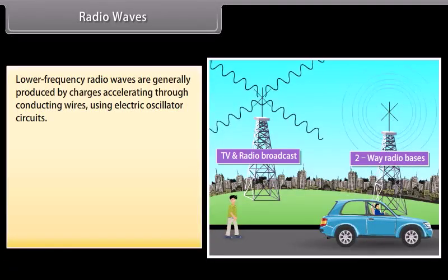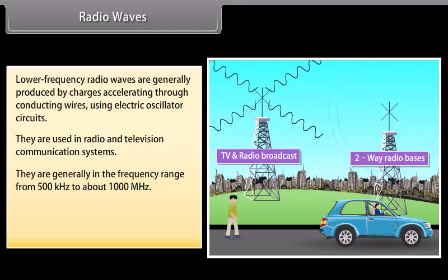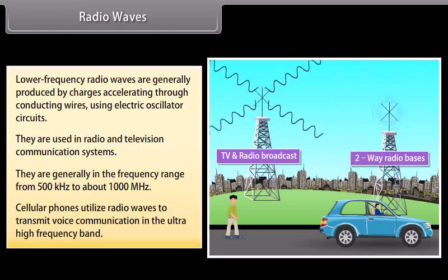Radio waves. Lower frequency radio waves are generally produced by charges accelerating through conducting wires using electric oscillator circuits. They are used in radio and television communication systems. They are generally in the frequency range from 500 kHz to about 1000 MHz. Cellphones utilize radio waves to transmit voice communication in the ultra-high frequency band.